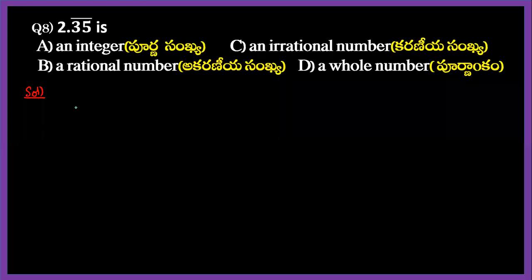Hi children, here is another question from real numbers. 2.3535 bar is: A) an integer, B) a rational number, C) an irrational number, or D) a whole number. So it's written 2 point 3 5 bar.